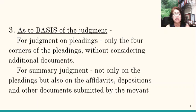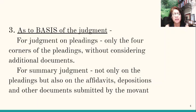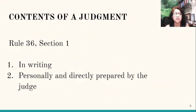As to the basis of the judgment, for judgment on the pleadings, the judge will only go within the four corners of the pleadings without considering anything outside the pleadings — no attachments, affidavits, or depositions. But for summary judgment, the judge will not only examine the pleadings; it is even required that there will be affidavits, depositions, and other documents submitted by the movant.